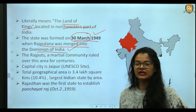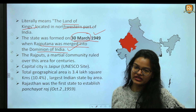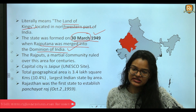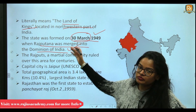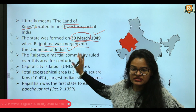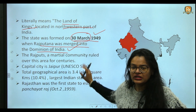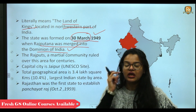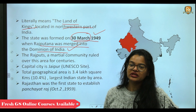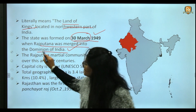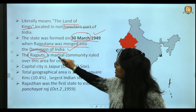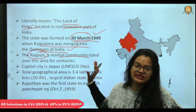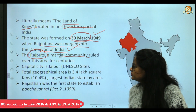When the British ruled India, the Rajasthan area was called Rajputana. It comprised 18 to 19 princely states. When these princely states merged into the Dominion of India, the state of Rajasthan was formed on 30th March 1949. In medieval ages, the Rajasthan area was ruled by the Rajputs, a martial community, who ruled over this region for many, many centuries.